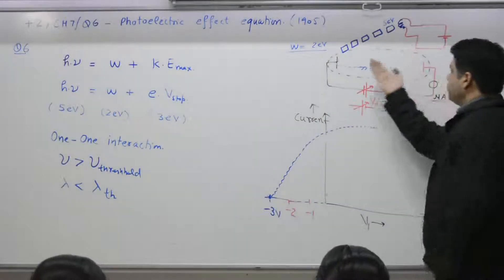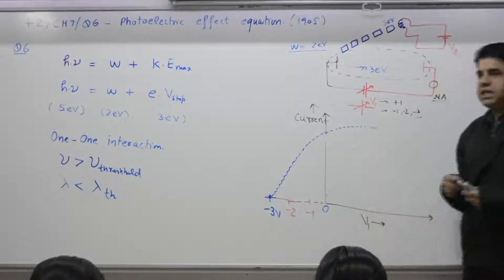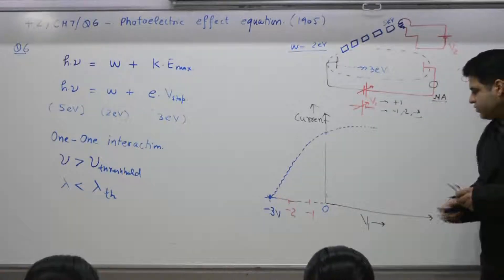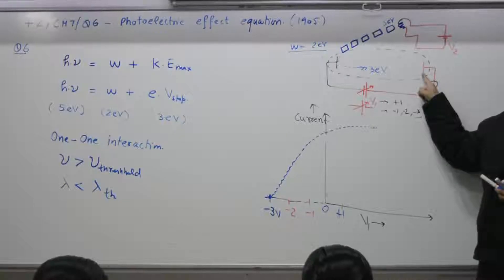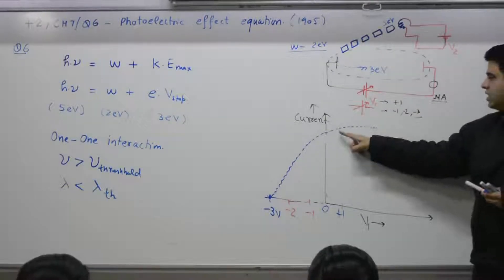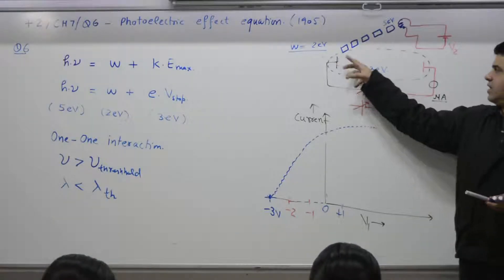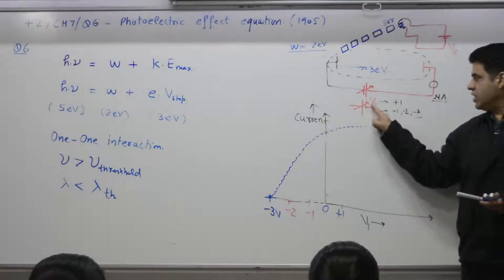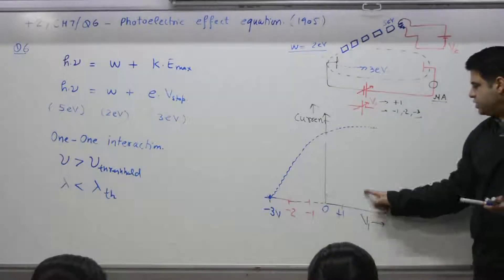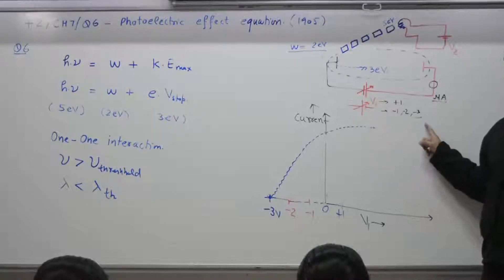If you make the voltage minus 1, the opposition is less and more electrons will reach the surface. When you make it 0, even more electrons reach. When you make it positive, say plus 1, this plate becomes positive, so it won't oppose the electron — it will attract and accelerate the electron, so current will increase. Why does it reach saturation? There is a limit: when all the electrons emitted from the surface are attracted, 100 percent of the electrons emitted move into the circuit. After that, if you increase this voltage, there is no use. At plus 2 volt, almost 100 percent of the electrons have reached the surface, so it reaches a saturation point.